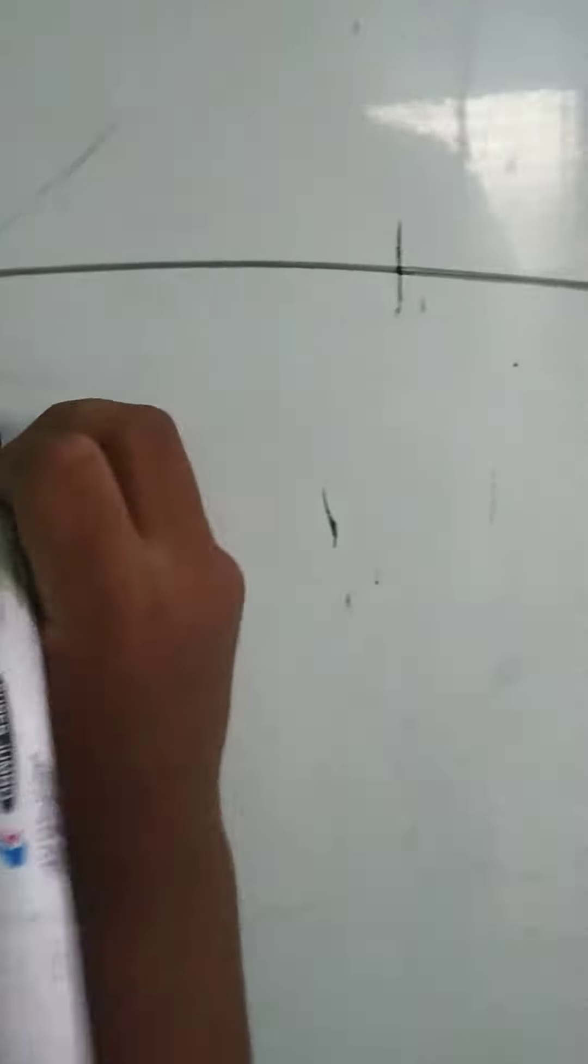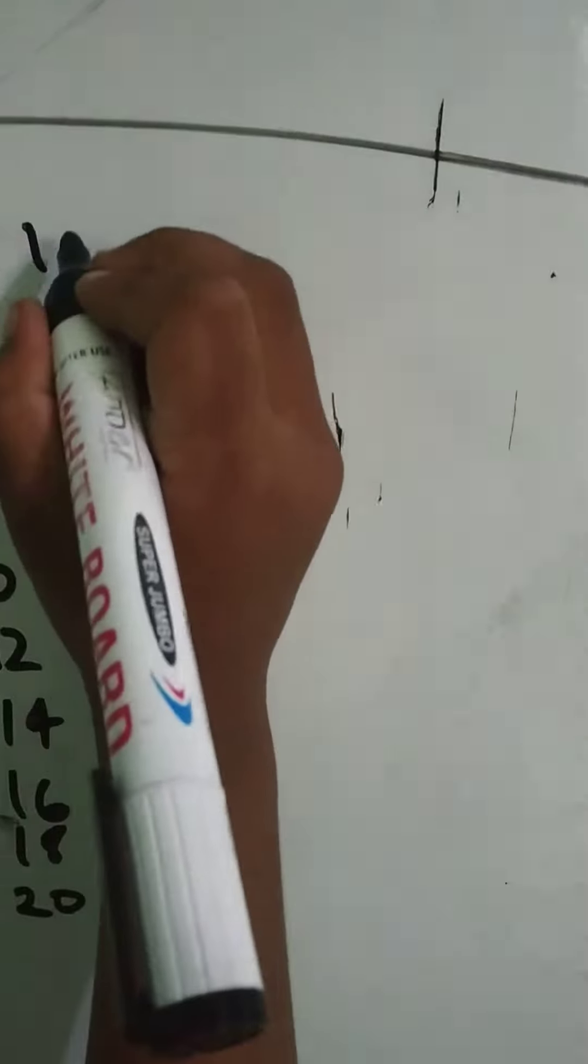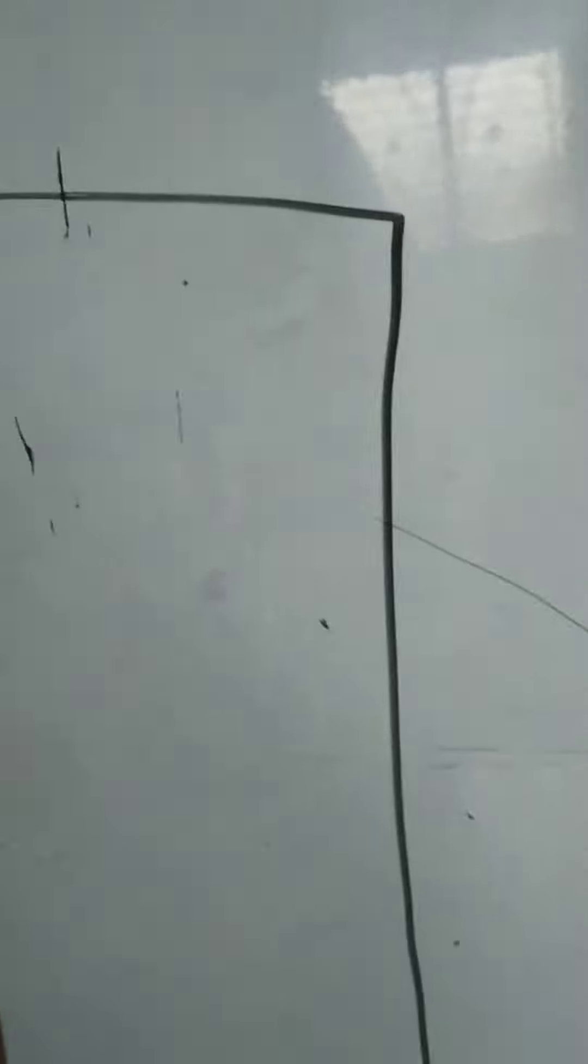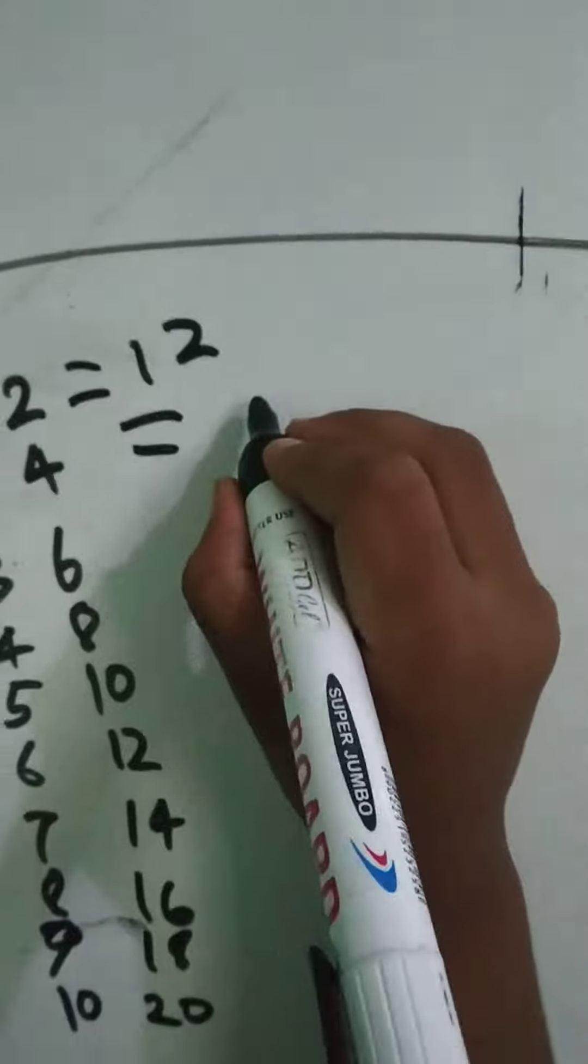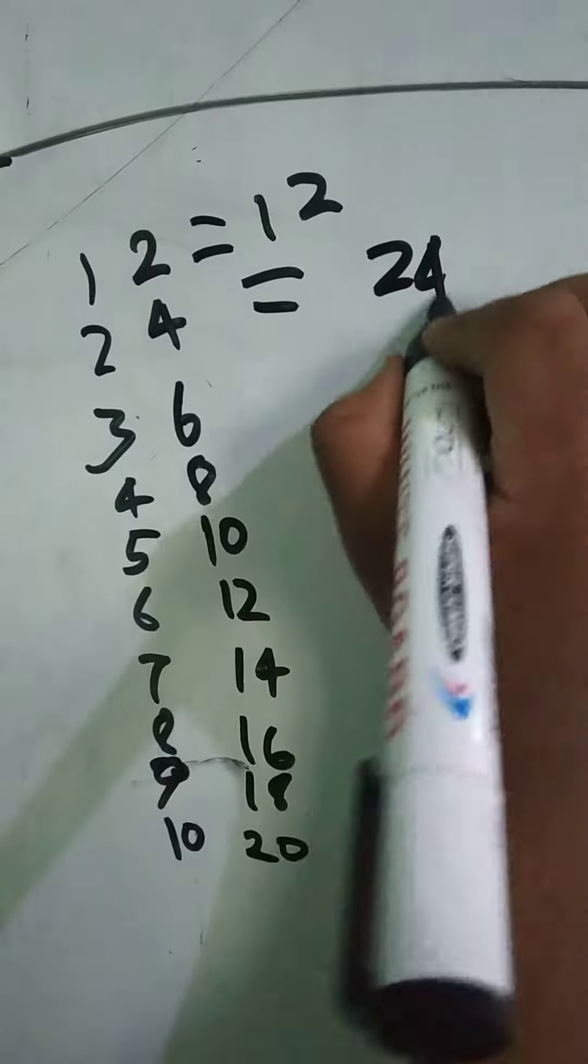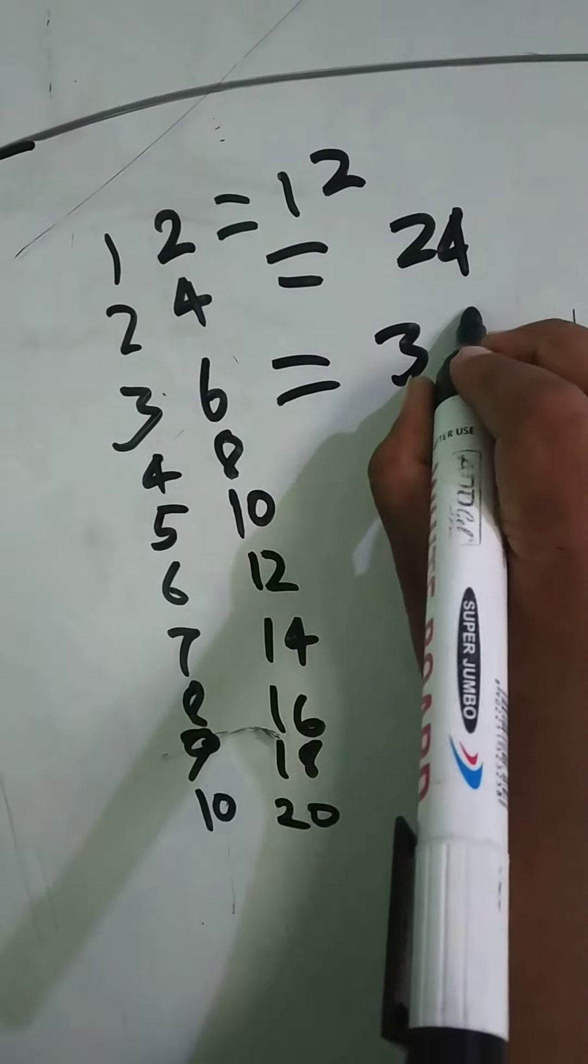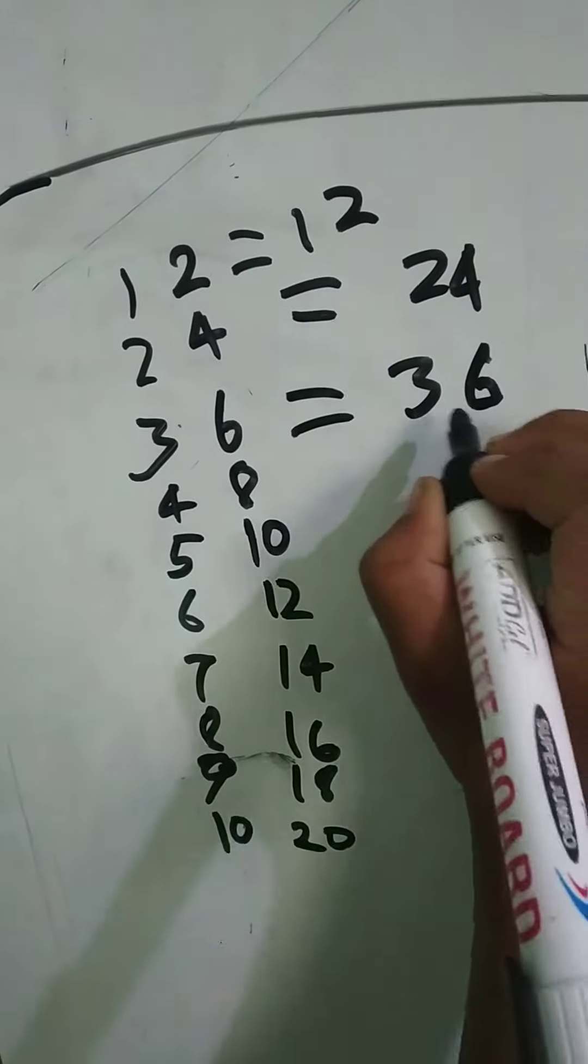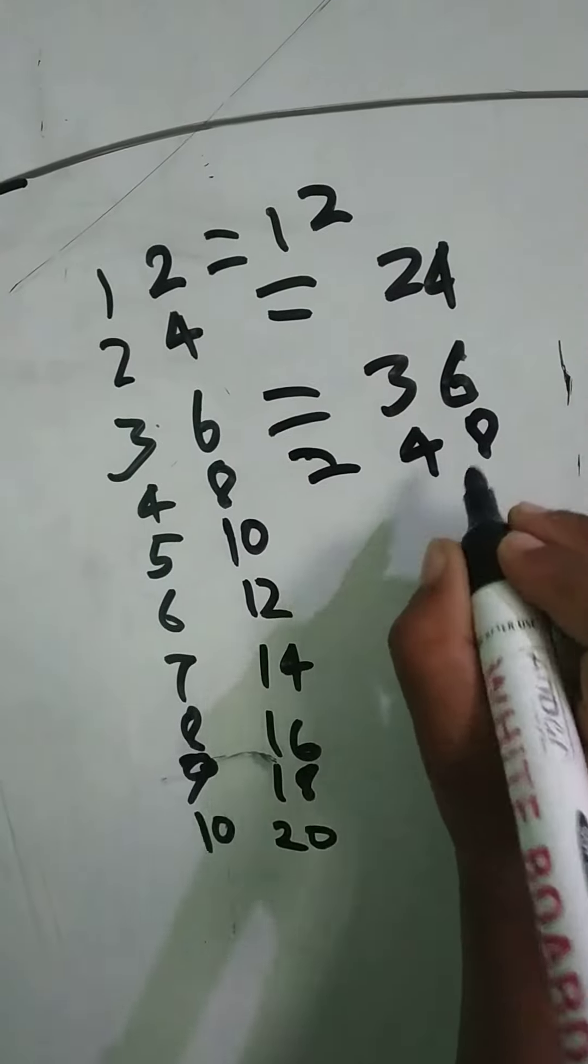Let's write this as well. Here, 1 times 2 equals 2. Here, 2 times 4. Here, 3 times 6. Here, 4 times 8.